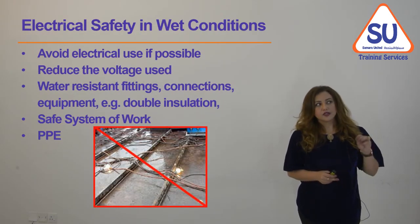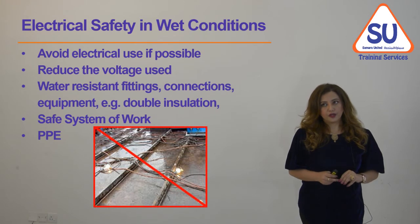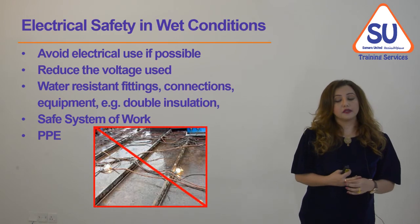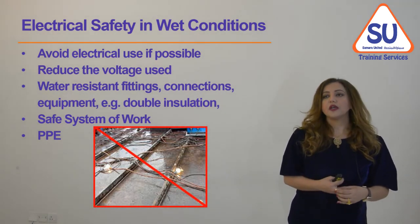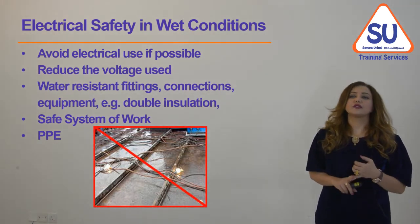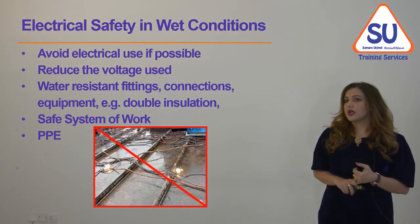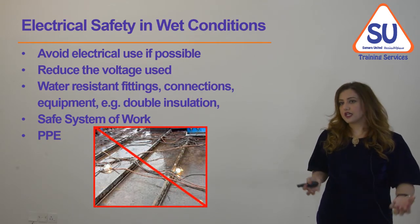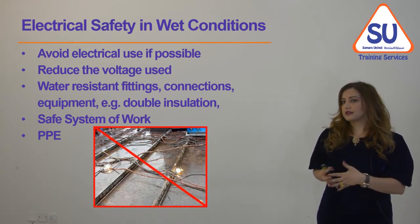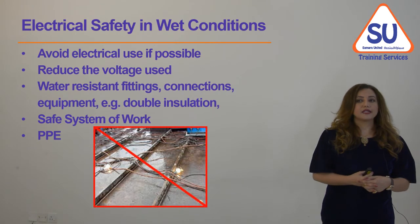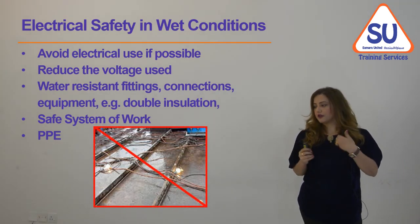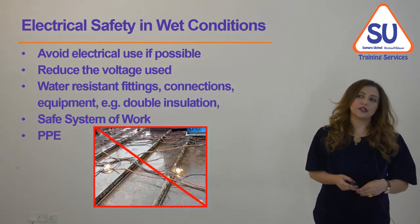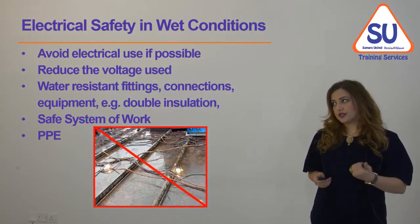Working in wet conditions is a challenge for electrical safety, and we should try to avoid that situation as much as possible. When it cannot be avoided, we reduce the voltage used, use water-resisting materials, equipment, and connections with double insulation, apply a safe system of work with the required precautions, and provide information, instruction, training, and supervision to staff, as well as the right PPE for these conditions.